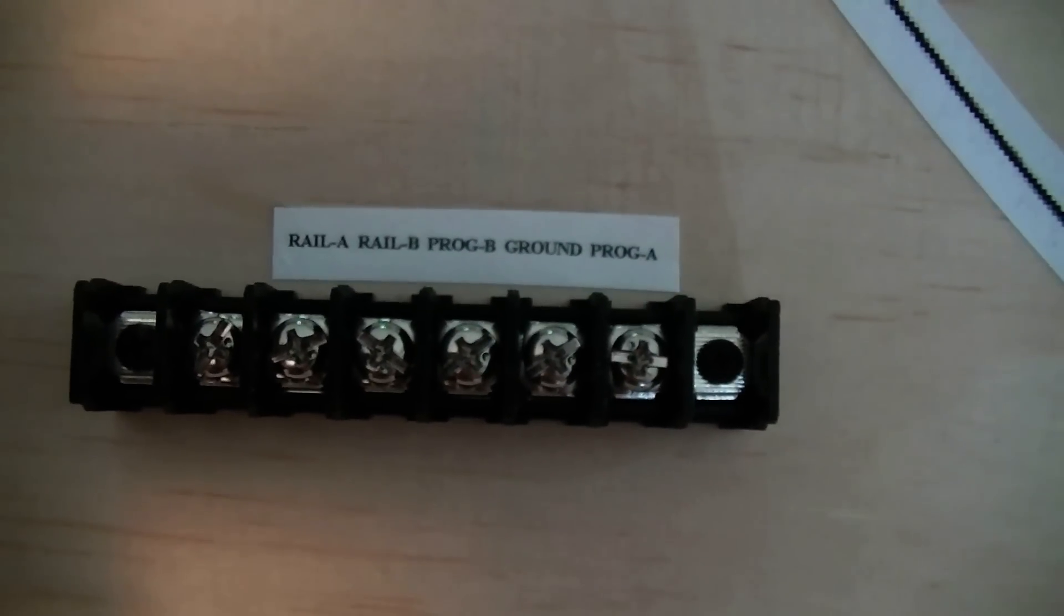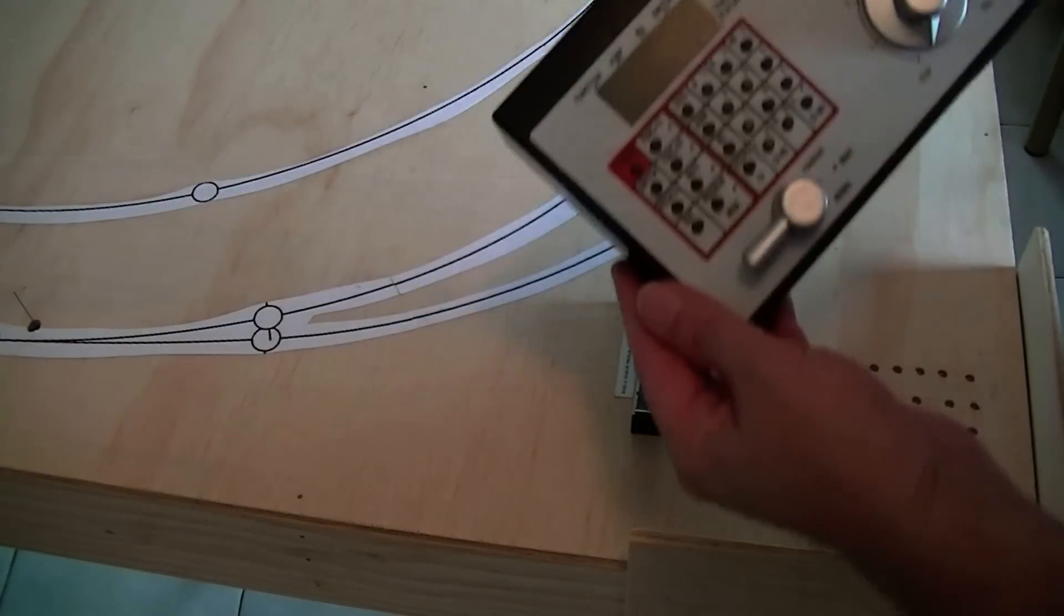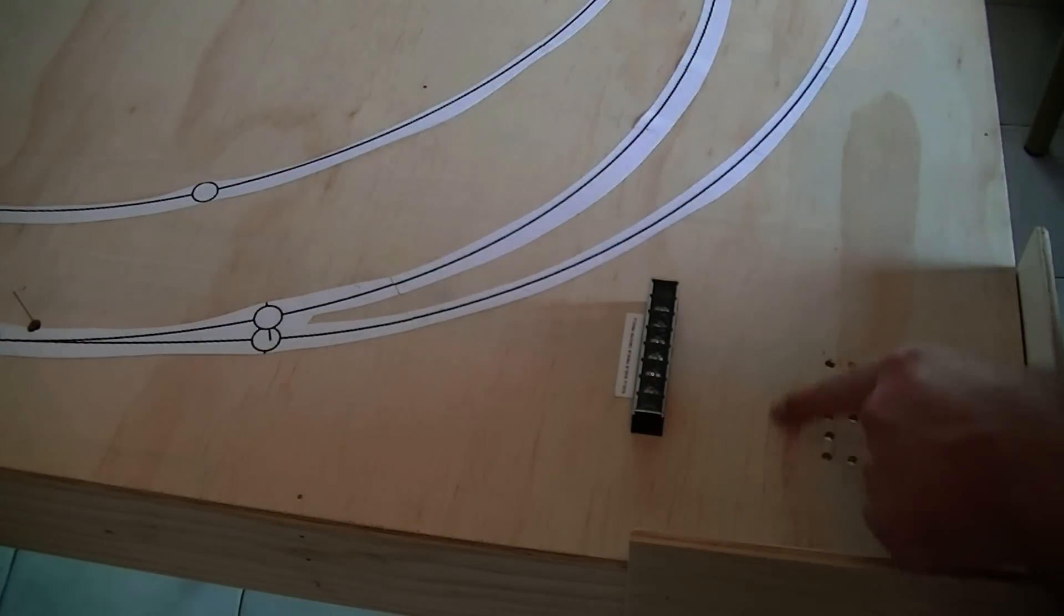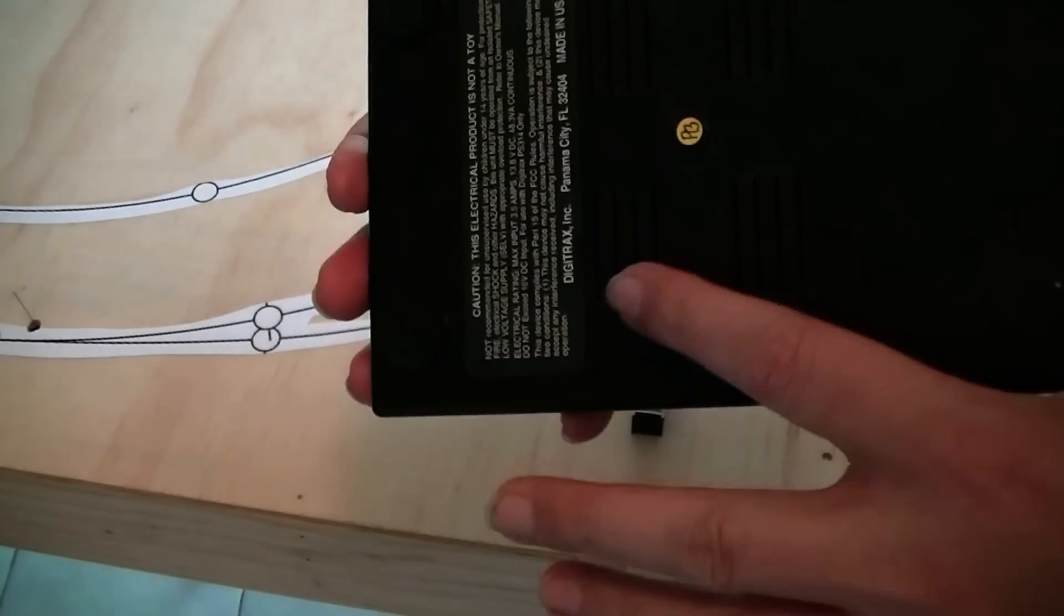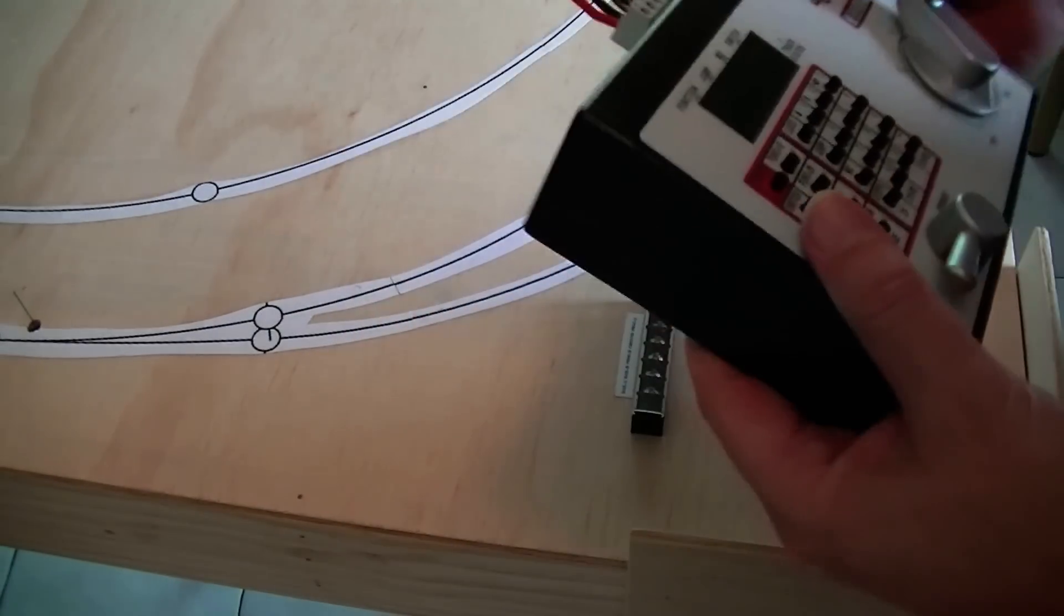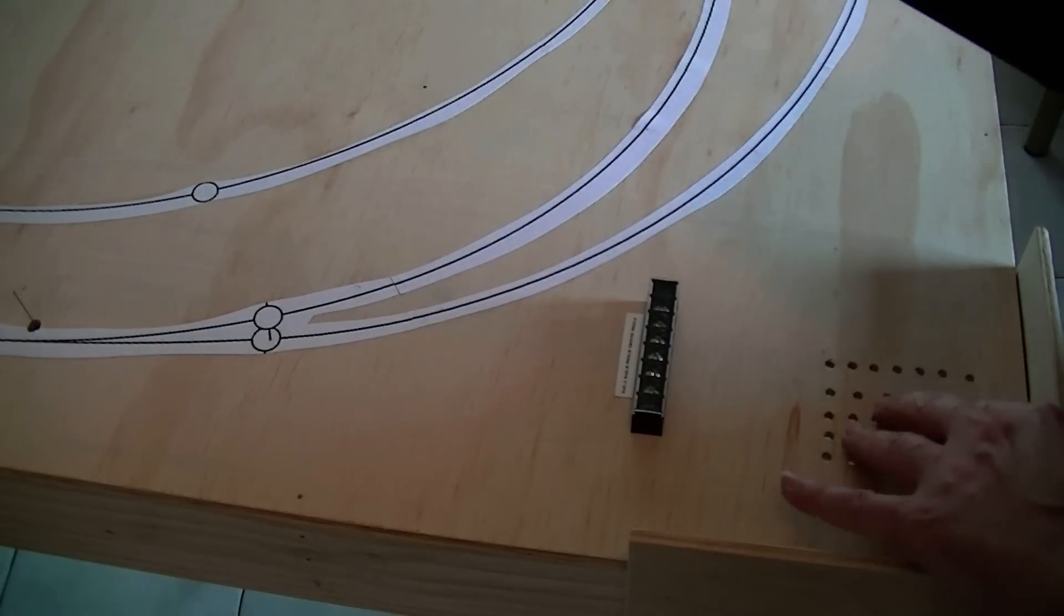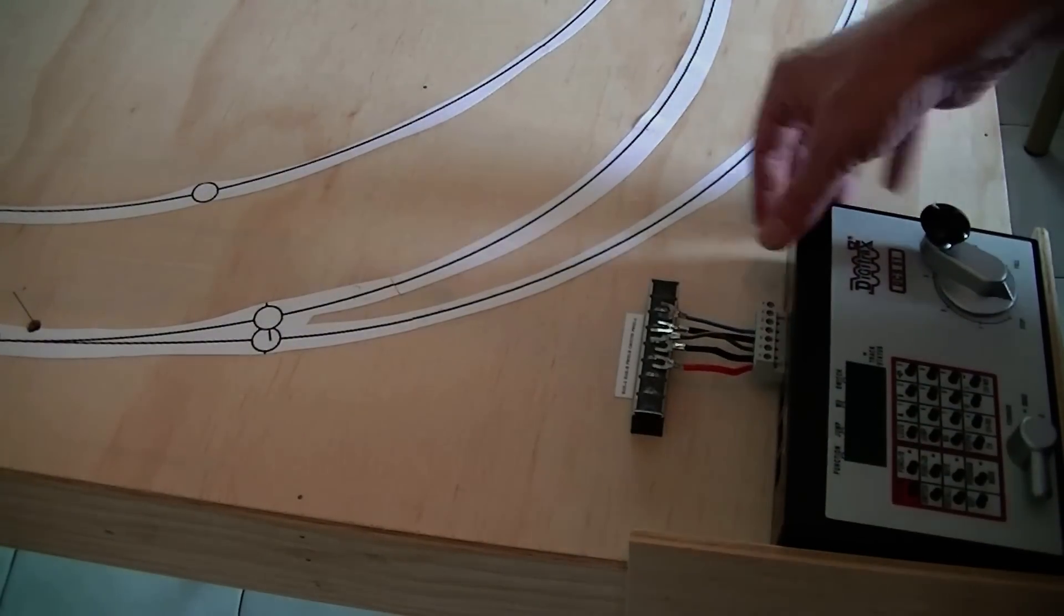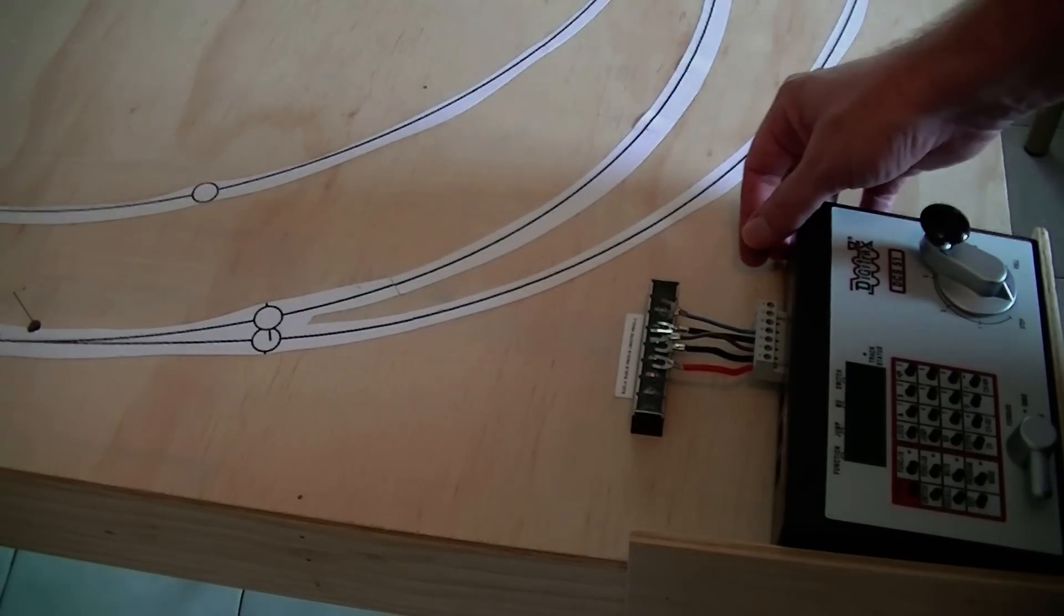All right, so I got the DCS 51 here with the wires ready to go on the back. I drilled these holes here in the board because if you look underneath there are actually some ventilation grills, and this could be on for hours and hours at a time, so that's just a failsafe so it doesn't overheat. It's a simple matter of just hooking these up and we're good to go.